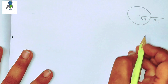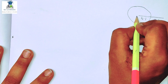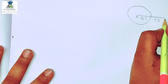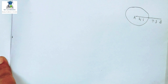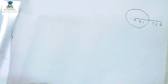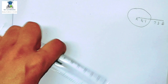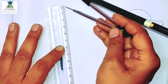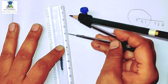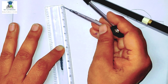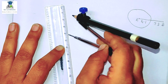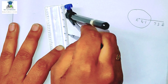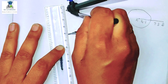तो हम name दे देंगे question को — A, B — कोई भी names दे सकते हो। Radius कितना दिया हुआ — 4.1 cm का radius है। Radius 0 से लेना है, 1 से नहीं start करना है, otherwise आपका diagram wrong होगा और marks नहीं मिलेंगे।